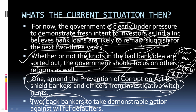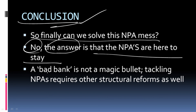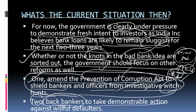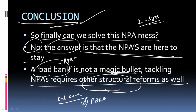The final conclusion: Can we resolve NPAs immediately? No. NPAs are here to stay because a bad bank or PARA is not a magic bullet. Tackling NPAs requires other structural reforms as well — amending the Prevention of Corruption Act and supporting bankers trying to recover money from willful defaulters. Don't conclude that just because a bad bank is established, NPAs will be solved overnight. NPAs will stay for at least another two to three years and will affect the economy.